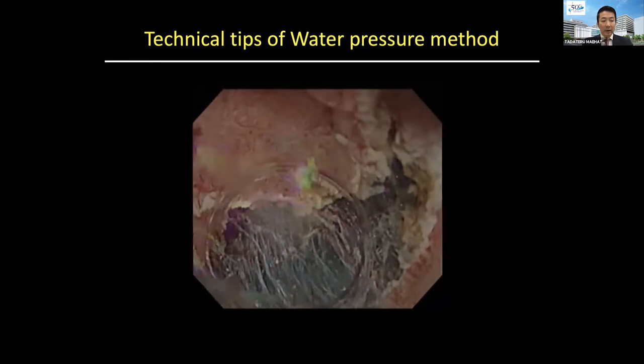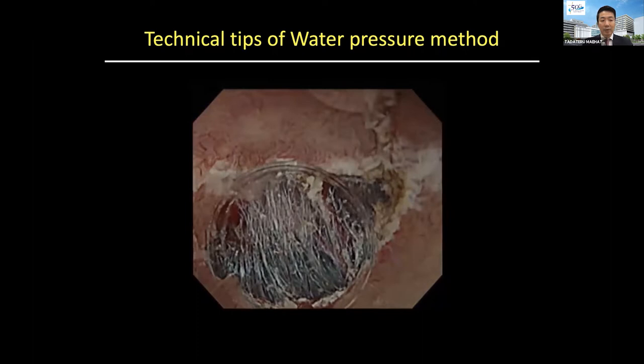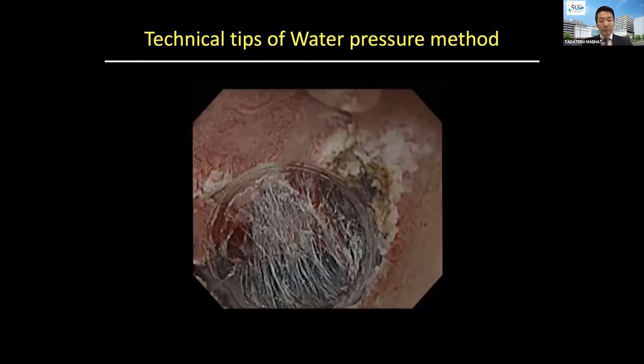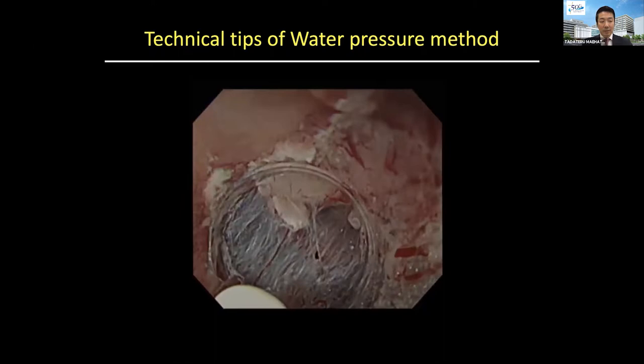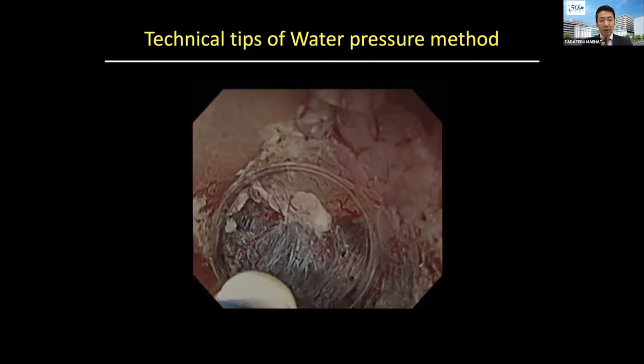Finally, we can go into the submucosal layer and create the mucosal flap. This also improves visibility within the submucosal layer, including blood vessels and the lateral edge. This method improves visualization of the lateral edge of the dissection layer, which is normally difficult to visualize in the dissection plane.